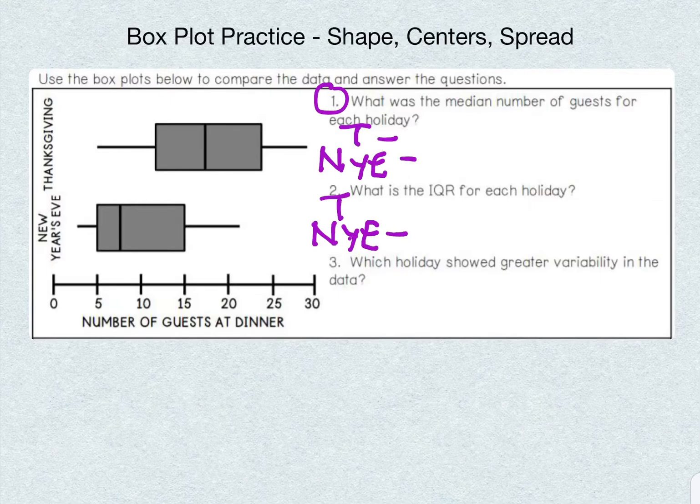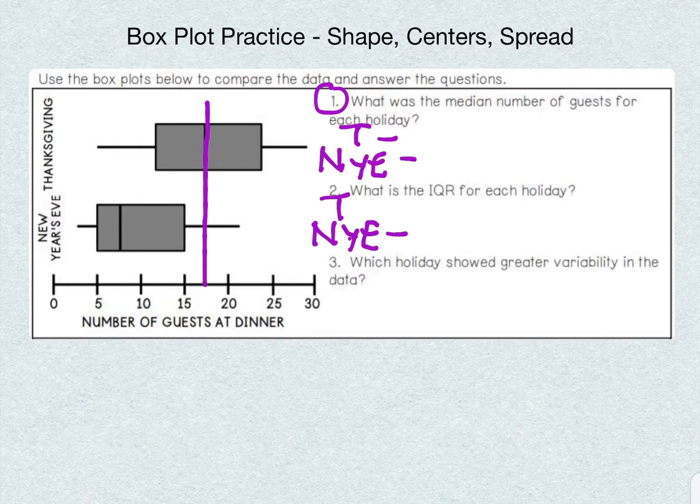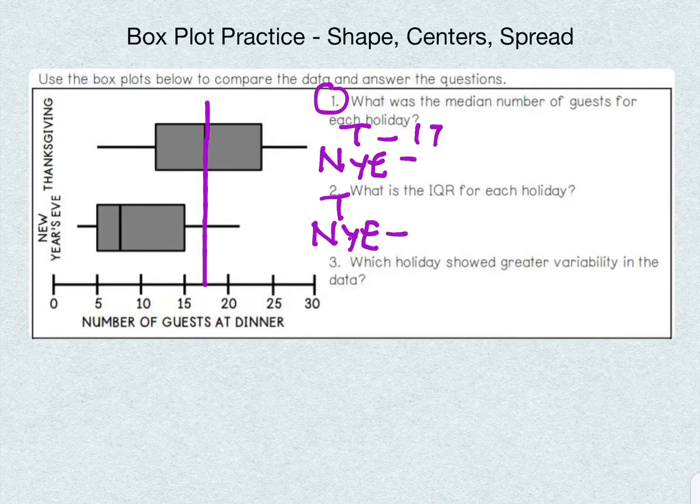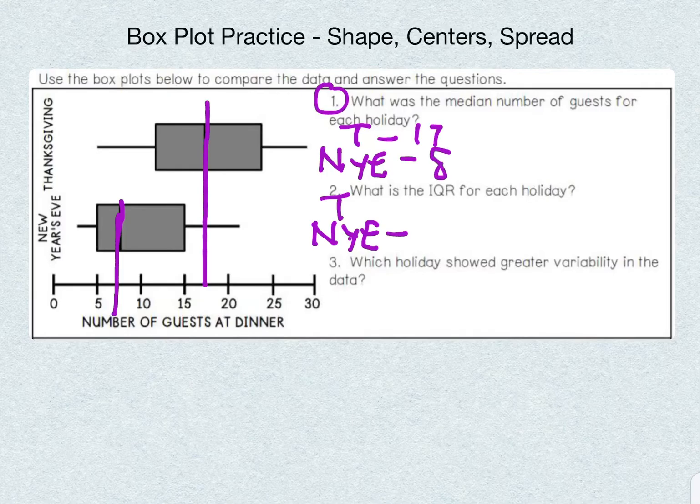We know the median is in the middle. So if we draw that line all the way down, it's about in the middle of 15 and 20, but it's a little closer to 15. So it's going to be around 17. And for New Year's Eve, when we draw this down, it's a little similar. It's almost right between 5 and 10, and this one's a little closer to 10. So this one is eight.